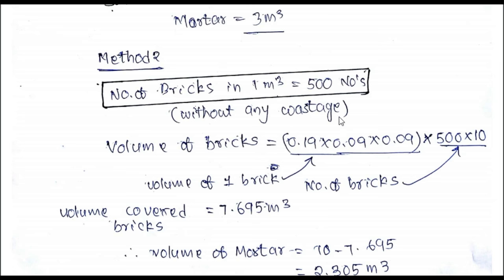If 500 number of bricks is required for 1 cubic meter, then for 10 cubic meters: 500 into 10. In this case I am considering a first class brick of standard size 19 centimeters by 9 centimeters by 9 centimeters. In meters: 0.19 into 0.09 into 0.09. This is the volume of one brick multiplied by number of bricks. You will get the volume covered by the bricks, which equals 7.695 cubic meters.